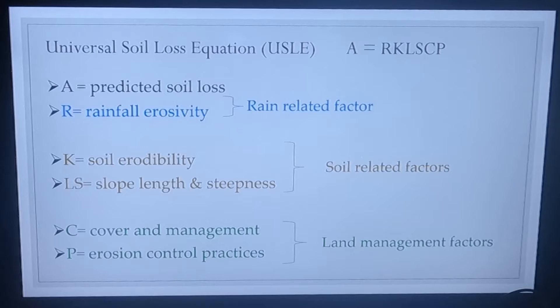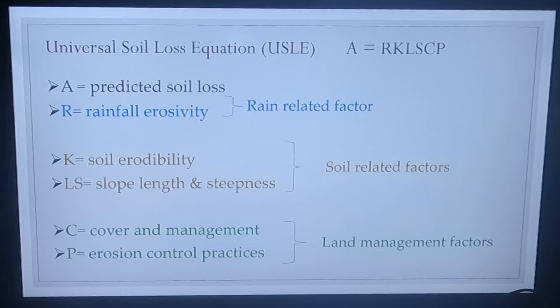We have a T-value, which is our threshold, and then we calculate A and compare A to T. If A is greater than T, we have a problem. If A is less than T, we should be okay. The T-factor represents how much soil forms over a certain period of time — if you can keep your A-value below five for that time period, you'll have no net loss. It will just be even.